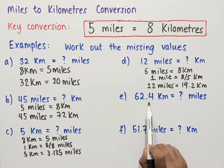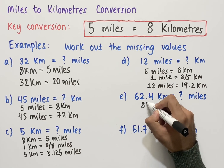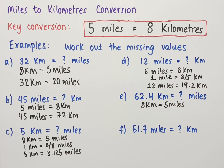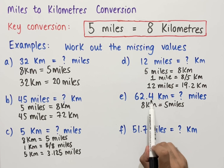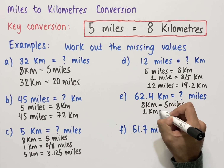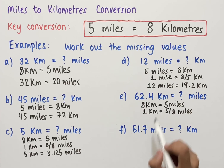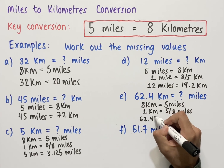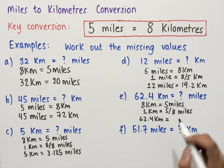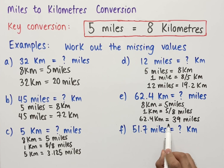Example E asks us to work out what 62.4 kilometers equals in miles. Starting with our conversion of 8 kilometers equals 5 miles, we check whether 62.4 is a multiple of 8 — it isn't, so we use the unitary method. Dividing both sides by 8 gives 1 kilometer equals 5/8 miles. Multiplying both sides by 62.4, we get 62.4 kilometers equals 5/8 times 62.4, which equals 39 miles.